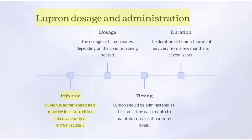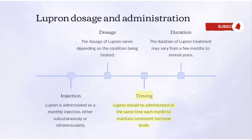Lupron dosage and administration: Lupron is administered as a monthly injection, either subcutaneously or intramuscularly. The dosage of Lupron varies depending on the condition being treated. Lupron should be administered at the same time each month to maintain consistent hormone levels. The duration of Lupron treatment may vary from a few months to several years.